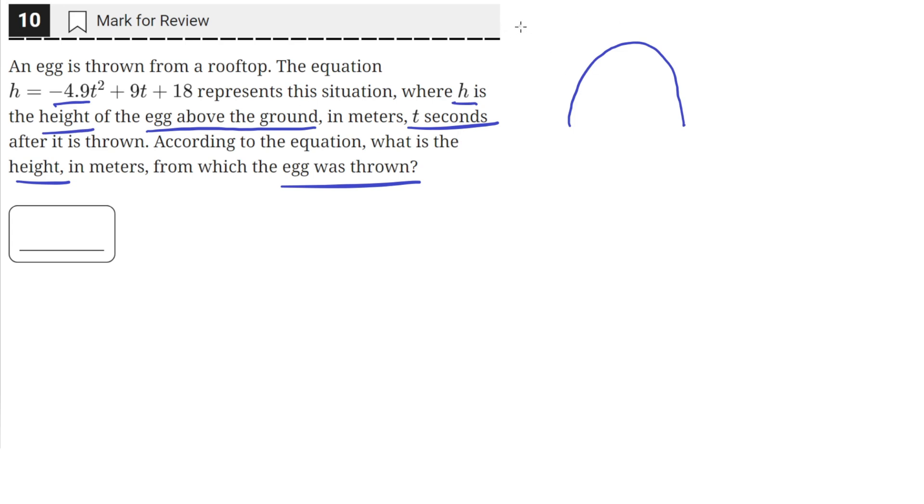h is on the y-axis and we need to find what height the egg was originally thrown from. So we can draw our xy-axis something like this where on the horizontal axis we'll have t the time and on the vertical axis we'll have h.